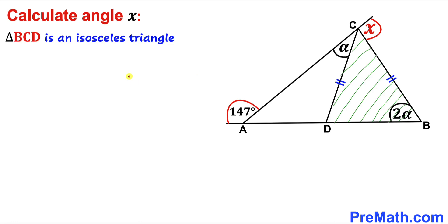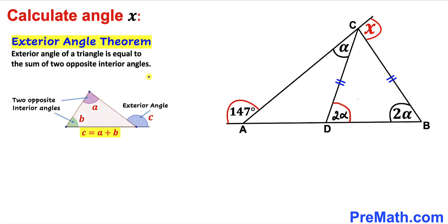Let's go ahead and get started. Let's focus on triangle BCD. We know that this is an isosceles triangle since this side is equal to this side, so therefore this angle has got to be equal to this angle. If this angle is 2 alpha, this angle has got to be 2 alpha as well.